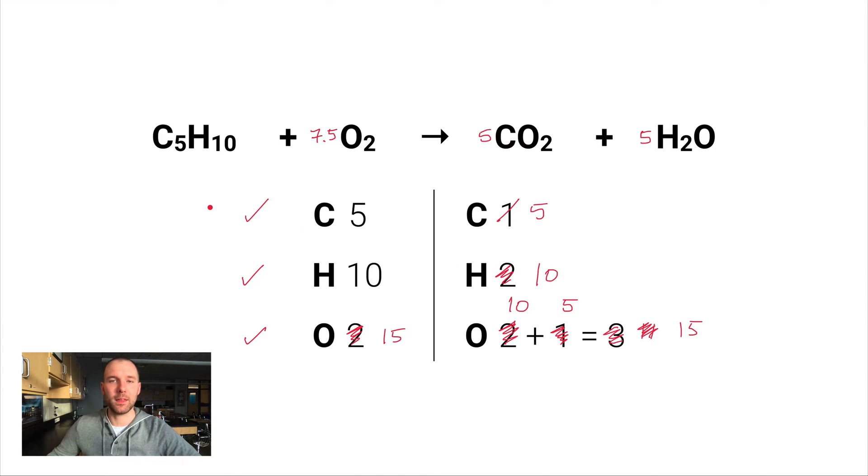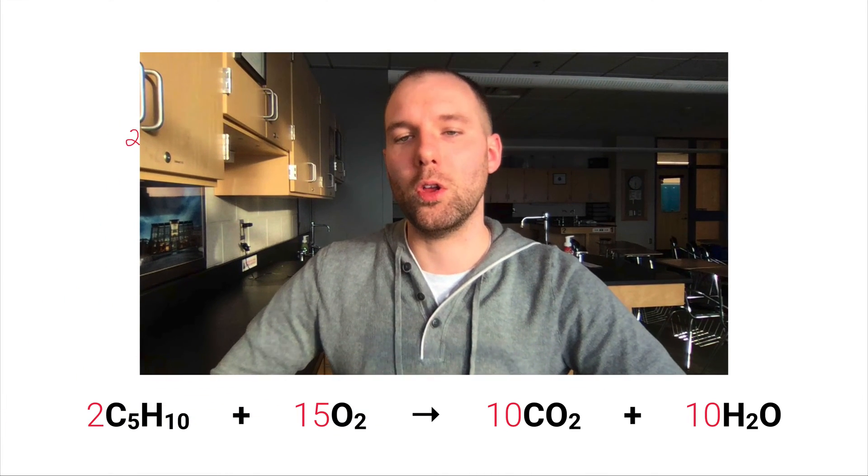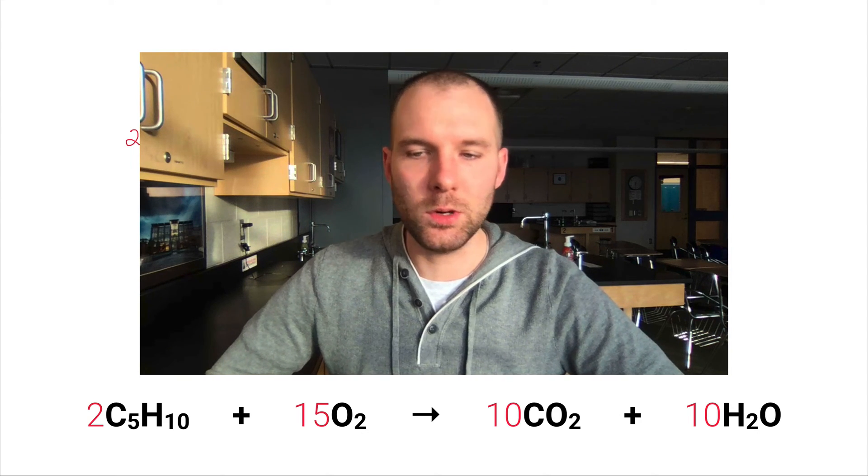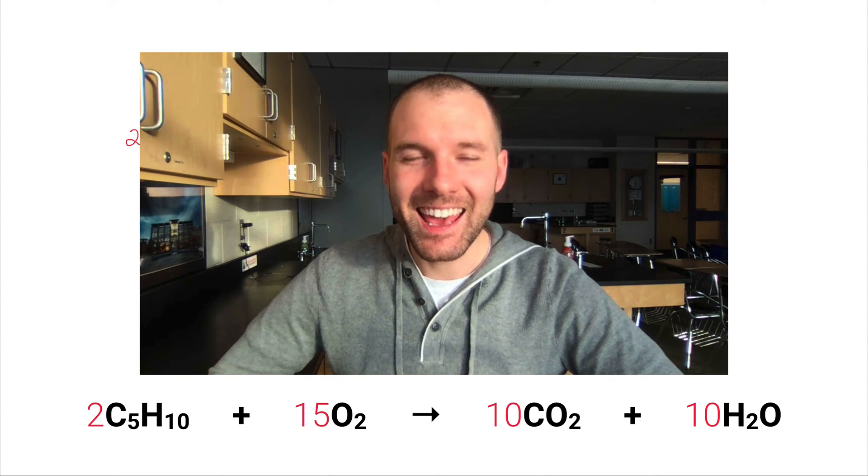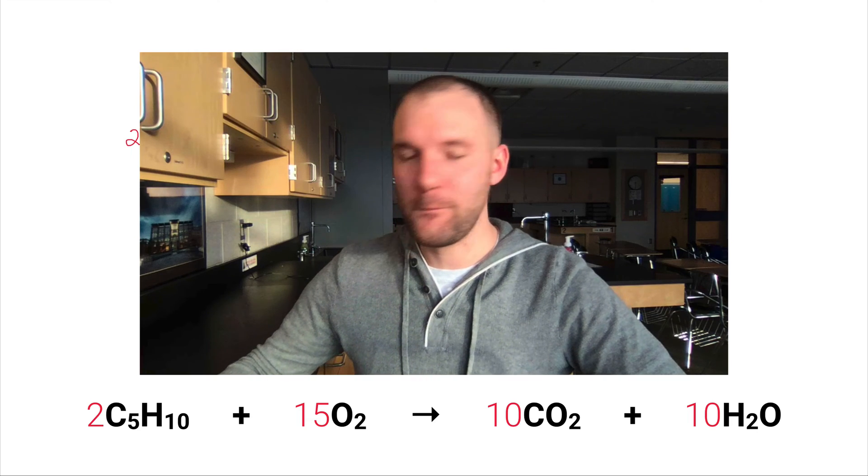So the fast way to get this into the lowest whole number ratio but still to maintain that same proportion is to double all of the coefficients. Now don't forget the coefficients are the front numbers, so this one here becomes a 2, this 7 and a half becomes a 15, this 5 becomes a 10, and this 5 becomes a 10. And so here's my overall balanced equation: 2, 15, 10, 10.